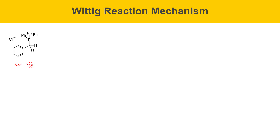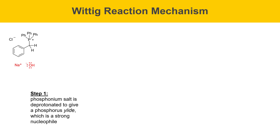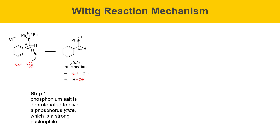This slide covers the mechanism of the Wittig reaction. In the first step, the phosphonium salt is deprotonated by the base to give a phosphorus ylid, which is a strong nucleophile. The oxygen of the base grabs one of the acidic protons on the phosphonium salt, and those electrons go to form a new carbon-phosphorus double bond, giving a species called an ylid. The phosphorus ylid has a phosphorus-carbon double bond polarized such that phosphorus is partially positive and carbon is partially negative. The ylid also has a resonance structure where carbon has a formal minus charge and phosphorus has a formal positive charge — both are valid resonance structures.